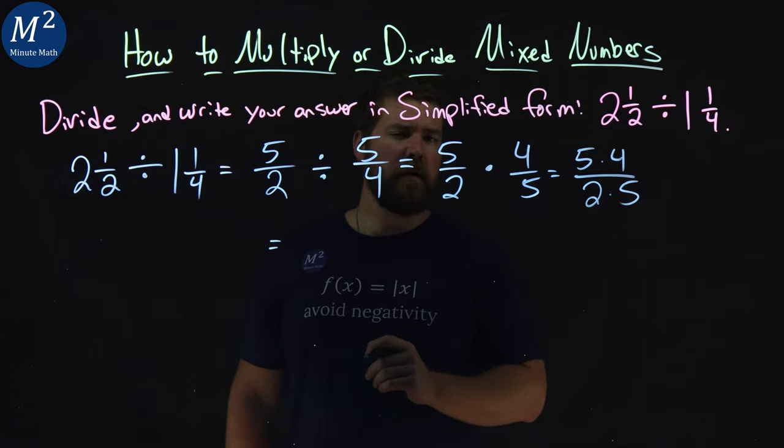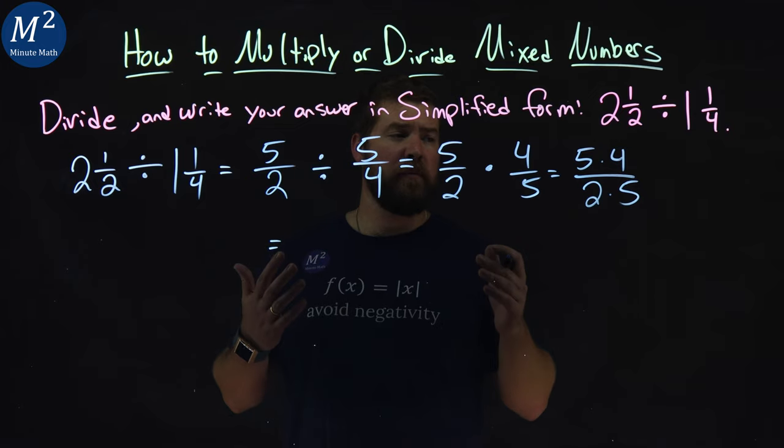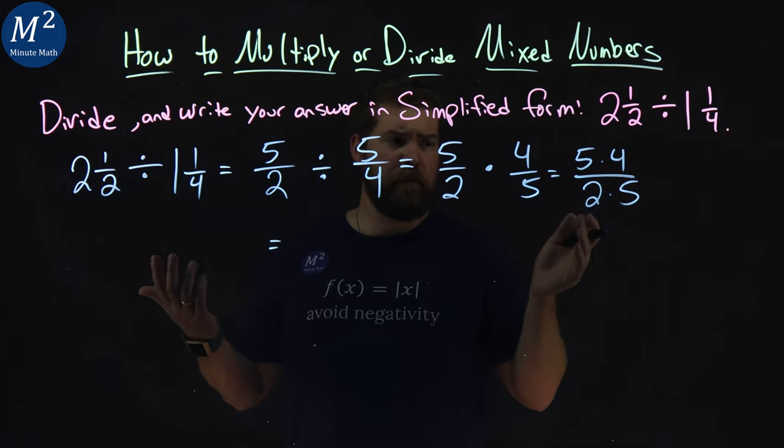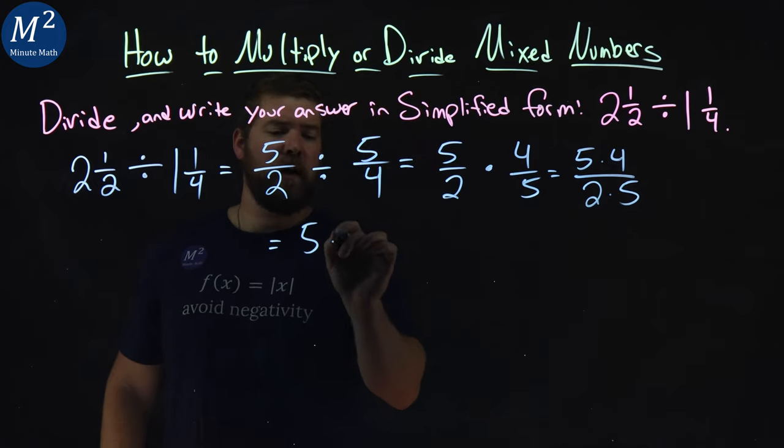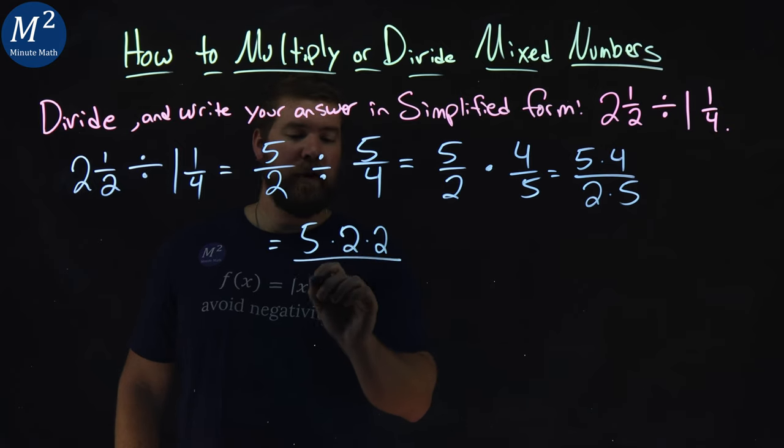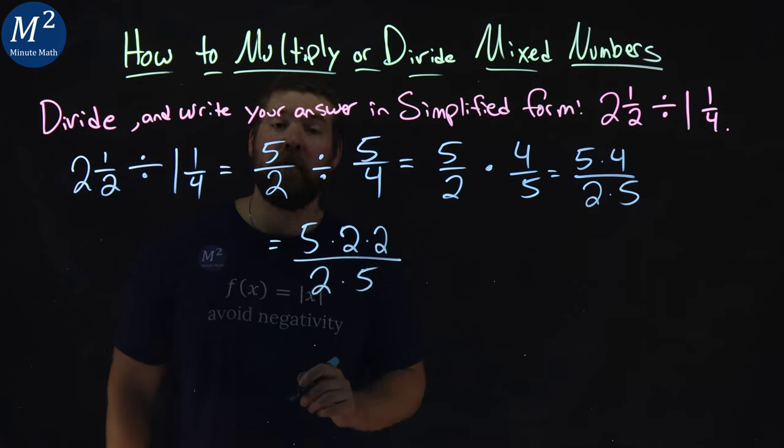Four breaks down to be two times two. No other number really breaks down. So let's rewrite this. Five times two times two over two times five.